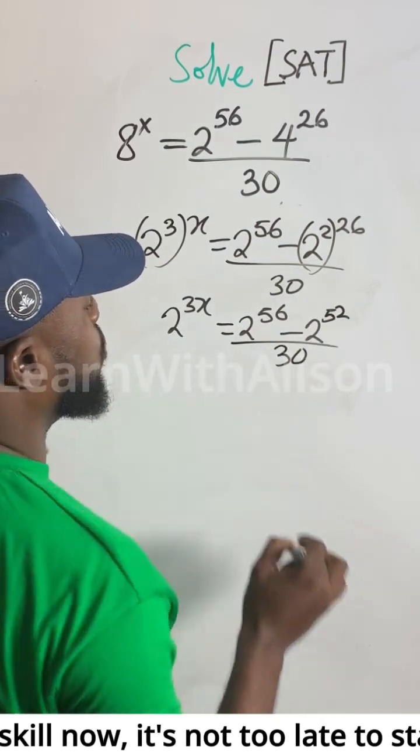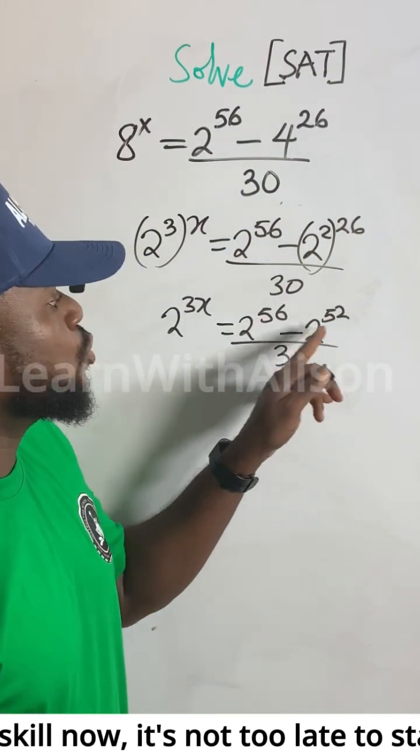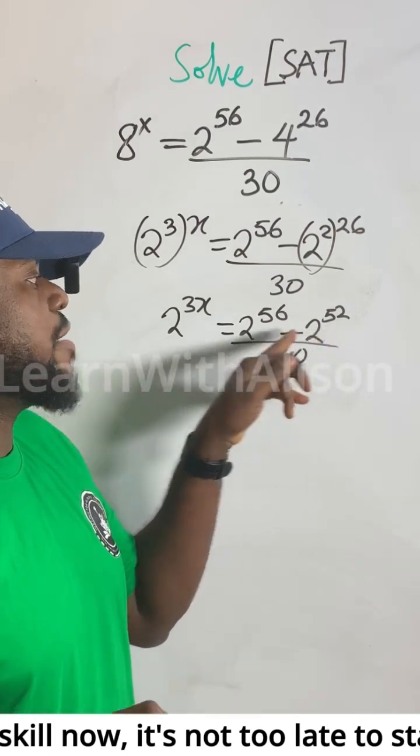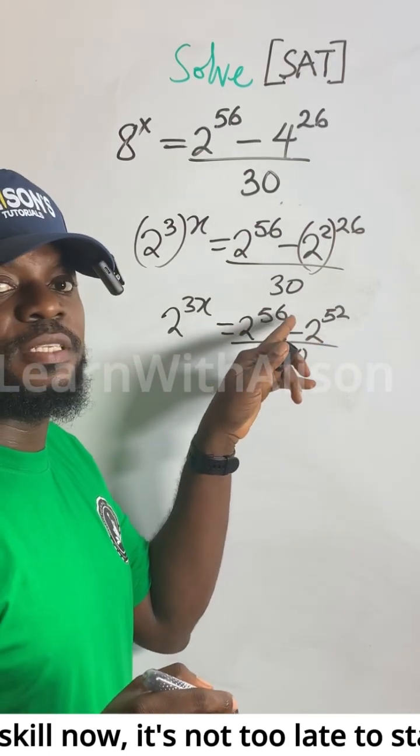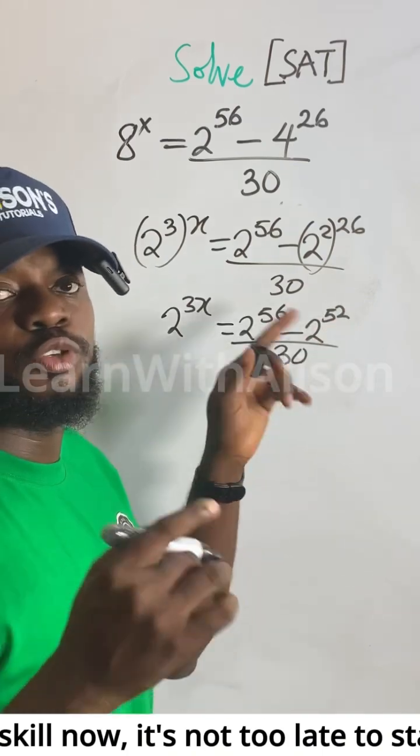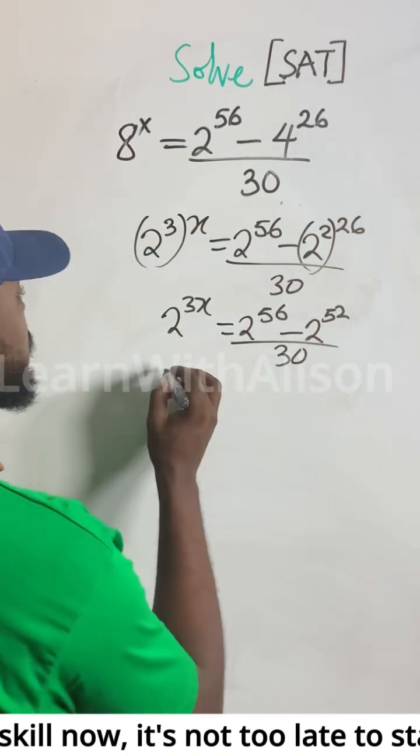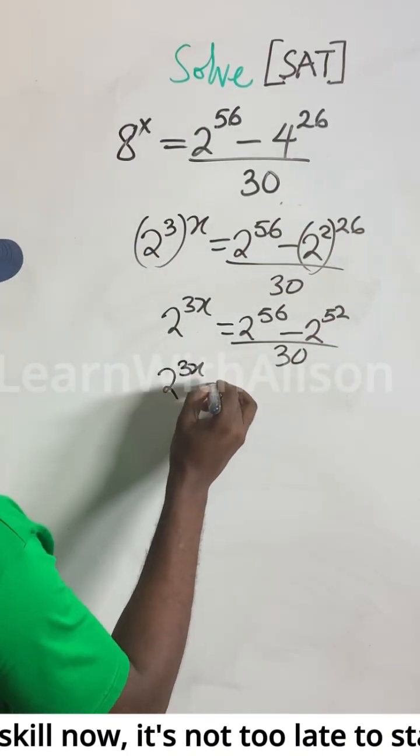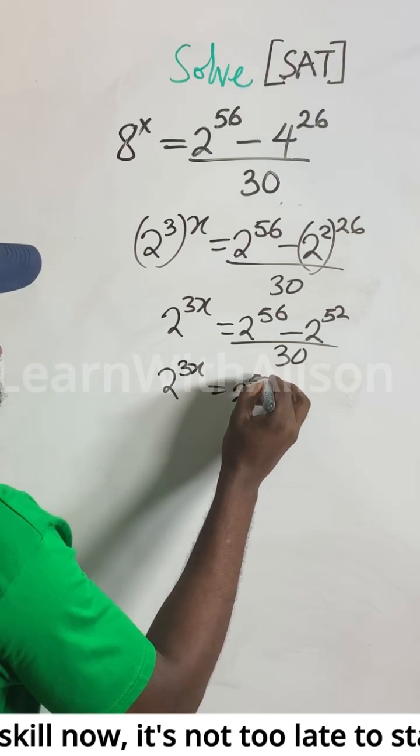You can see we have 2 to the power of 52 here, and we also have it inside 2 to the power of 56. That means 2 to the power of 52 is common to both terms, so we need to factor out 2 to the power of 52.